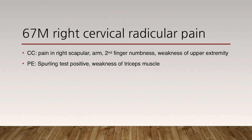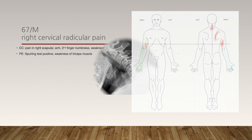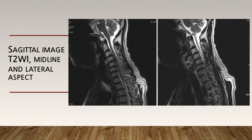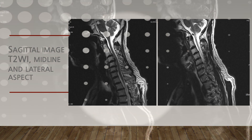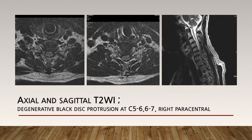Let me introduce my patient. He is 67 years old and admitted for right scapular and arm pain. He also complains of upper extremity weakness. He showed a positive Spurling sign and weakness of his triceps muscle. His simple X-ray shows diffuse cervical spondylosis. Sagittal T2-weighted image shows reversed cervical curvature and bulging disc. Far lateral sagittal image shows black disc protrusion at C5-C6 and C6-C7 level. Axial and far lateral sagittal T2-weighted image shows degenerated black disc protrusion with right C5-C6 and C6-C7 paracentral protrusion.